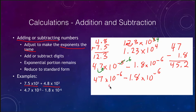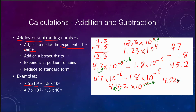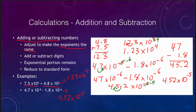Our result is 45.2 times 10 to the negative sixth. Converting to standard notation, we move the decimal one place to the left, which increases the exponent from negative six to negative five, giving a final answer of 4.52 times 10 to the negative fifth. To summarize: the first addition problem gave 1.23 times 10 to the fourth, and the subtraction problem gave 4.52 times 10 to the negative fifth.